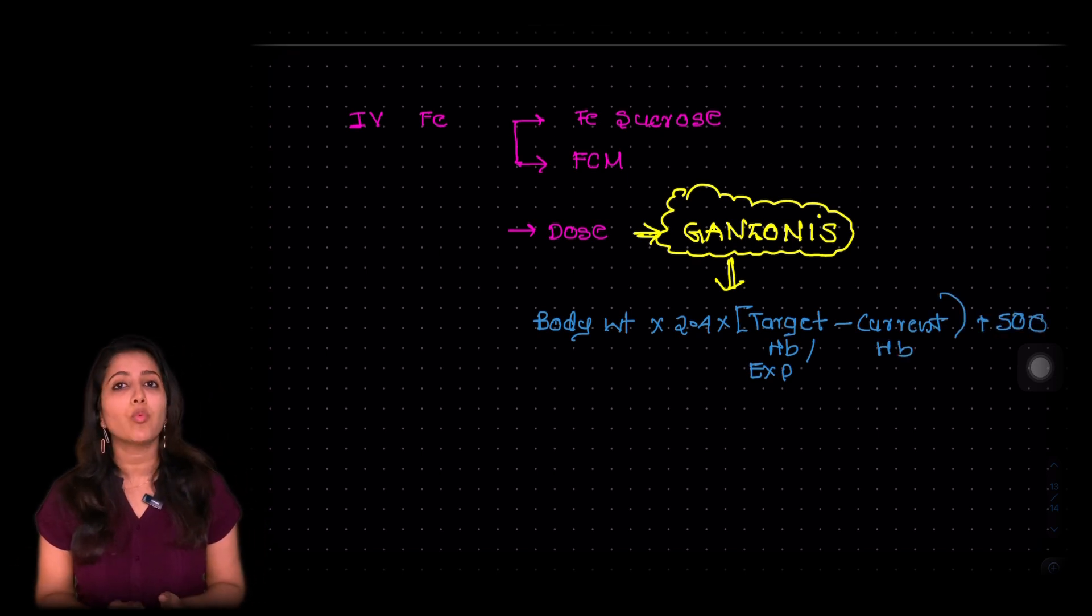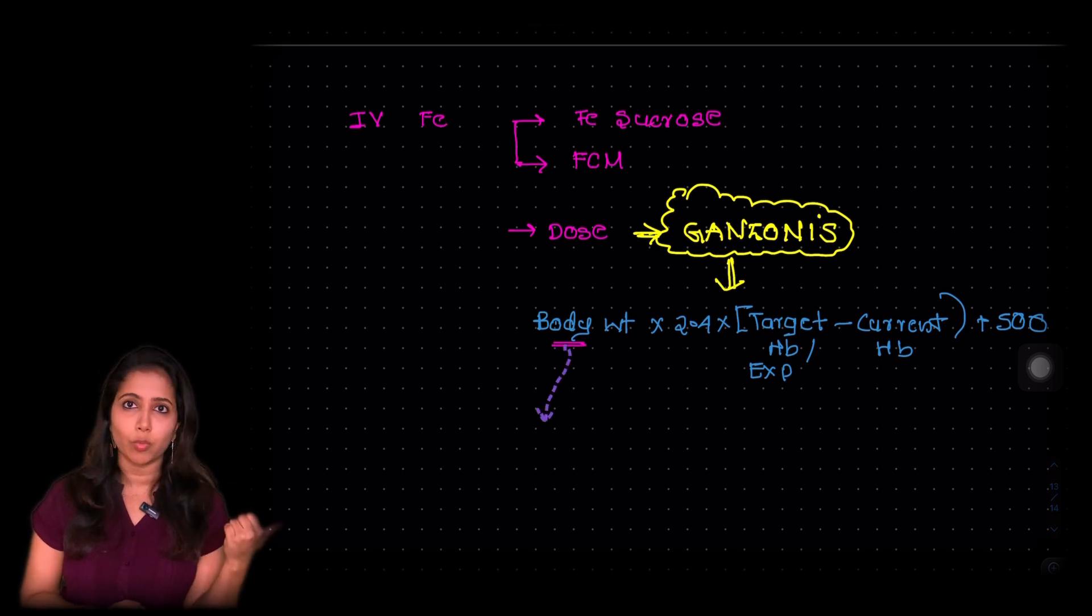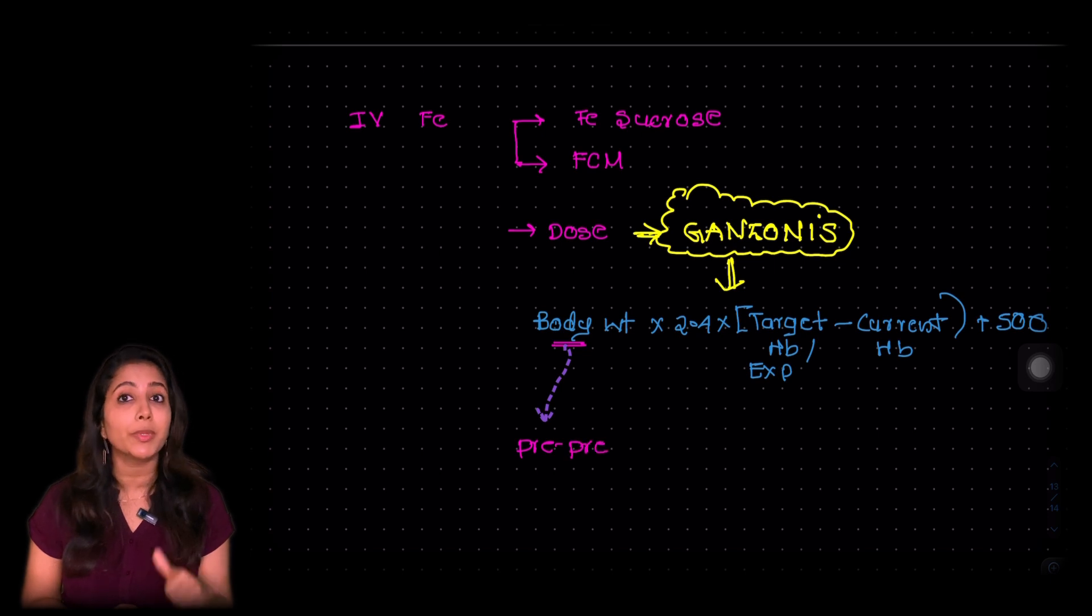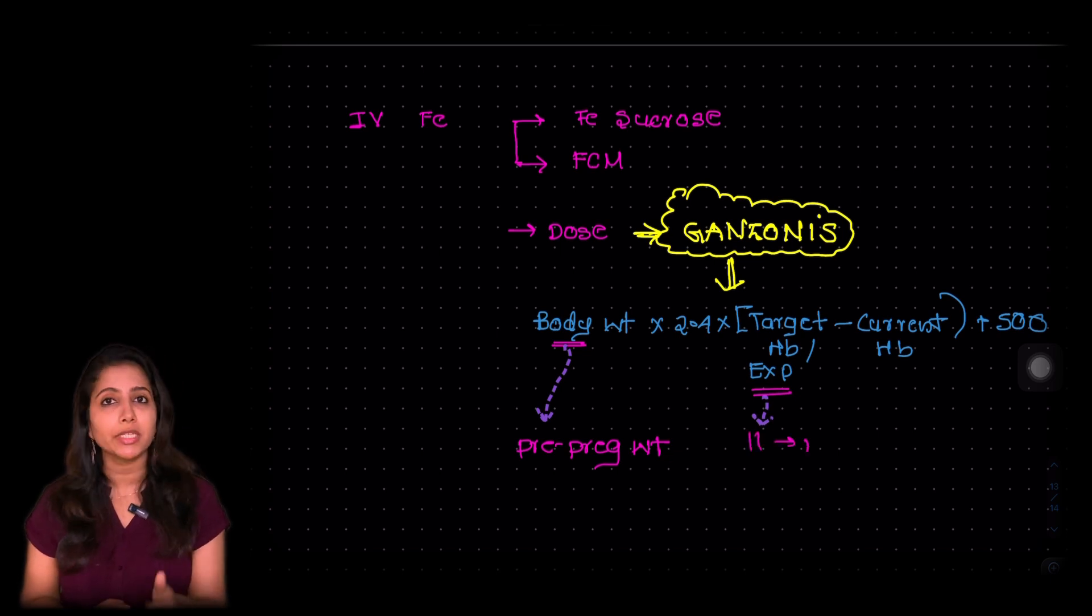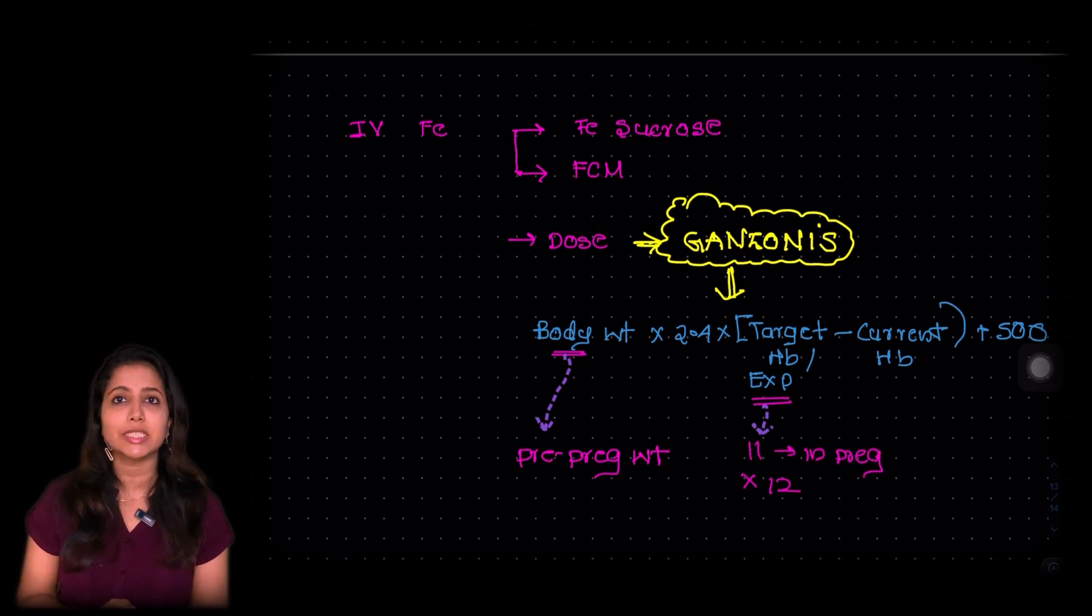So what I want you to note in this is the weight which is mentioned is the pre-pregnancy weight, not the current weight but the pre-pregnancy weight. And what is the target hemoglobin? It is not 12. For a pregnant woman, the target hemoglobin is 11.